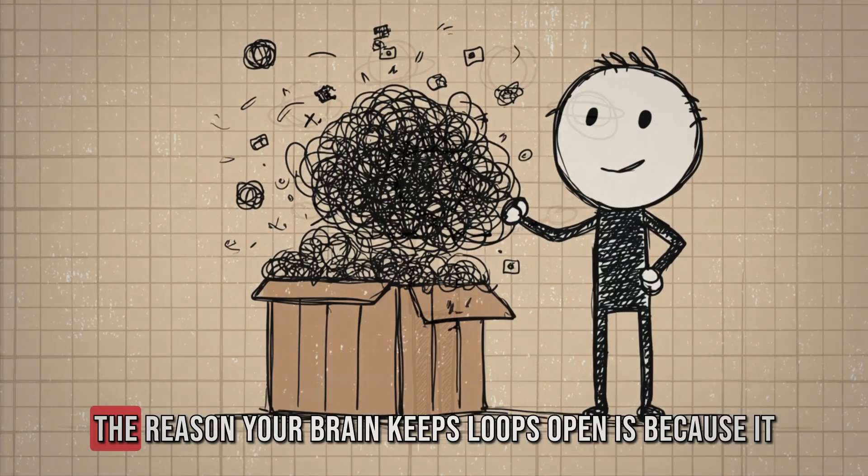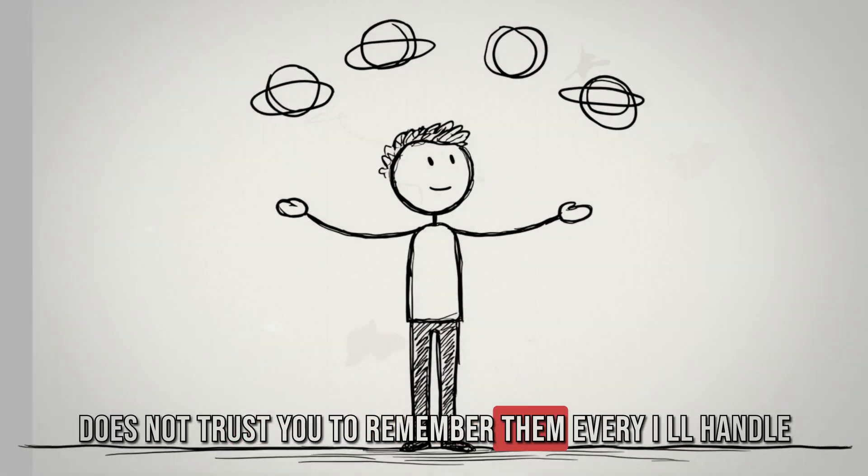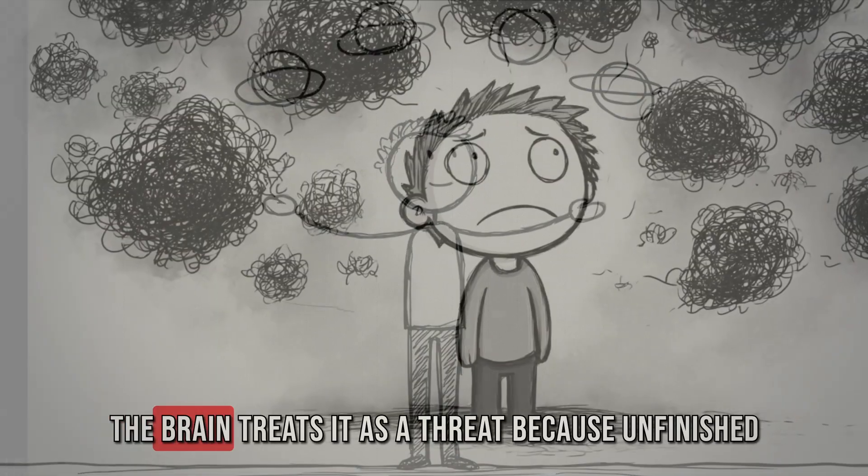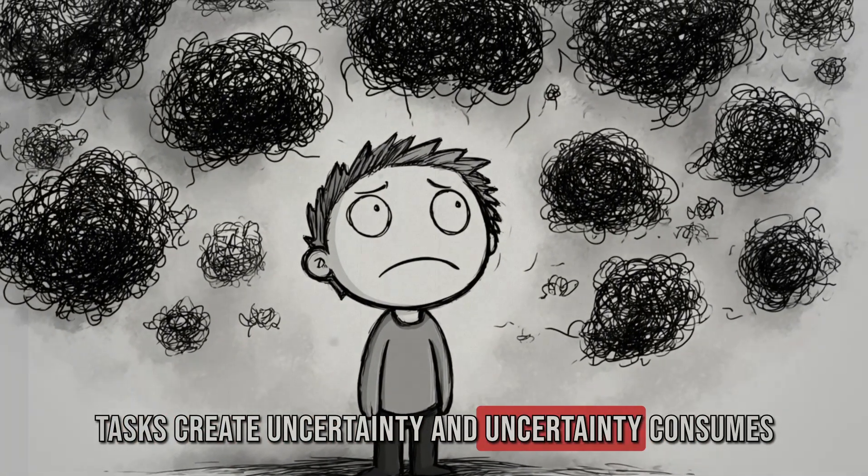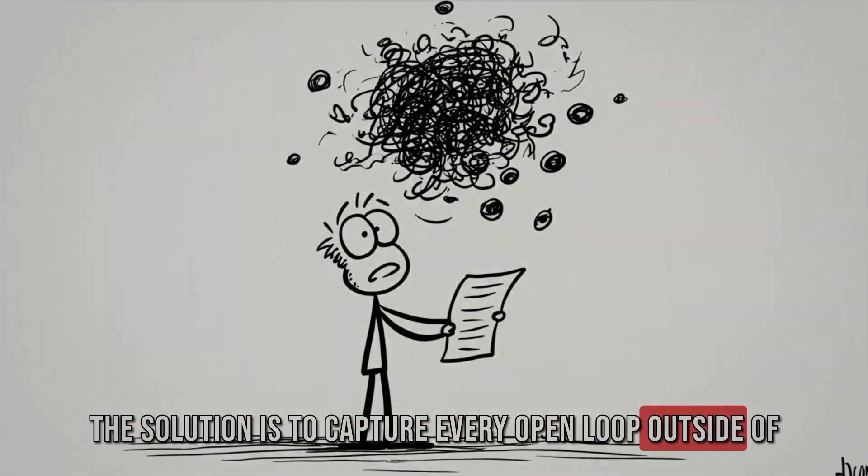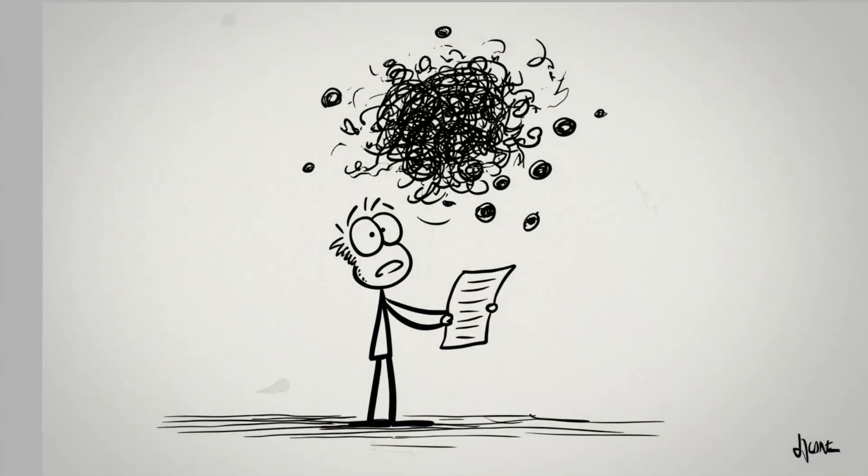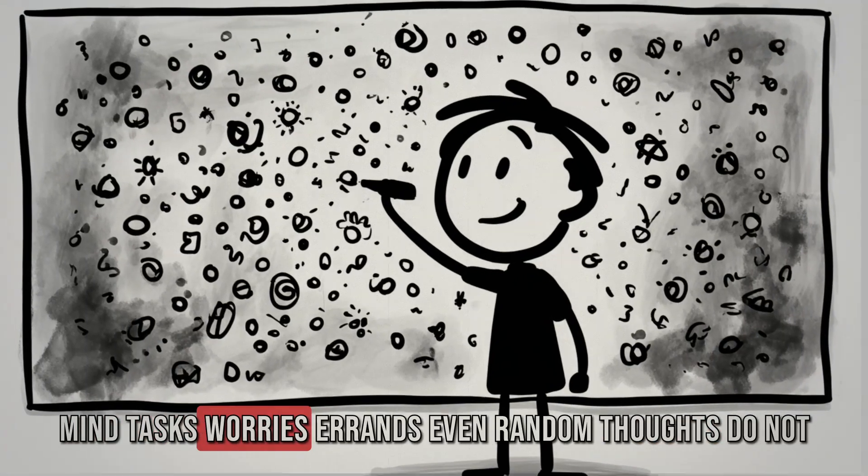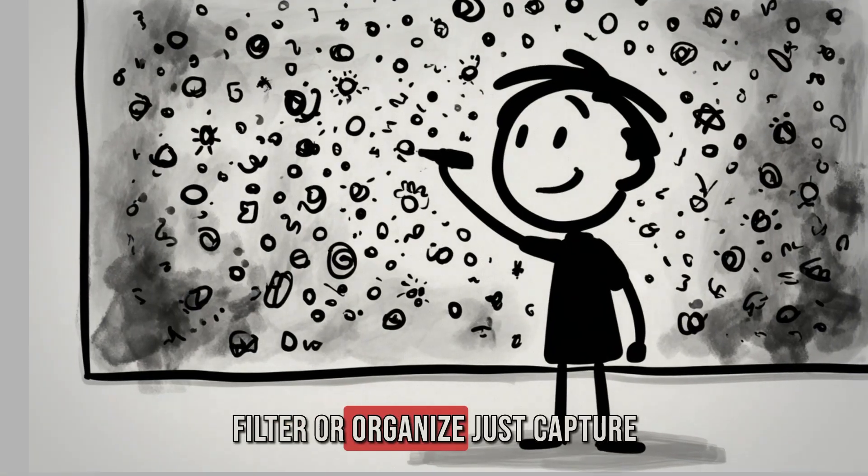Phase one is capture. The reason your brain keeps loops open is because it does not trust you to remember them. Every, I'll handle this later, becomes a liability. The brain treats it as a threat because unfinished tasks create uncertainty. And uncertainty consumes energy. The solution is to capture every open loop outside of your head. Take a sheet of paper or open a blank document. Write down absolutely everything that floats in your mind. Tasks, worries, errands, even random thoughts. Do not filter or organize, just capture.